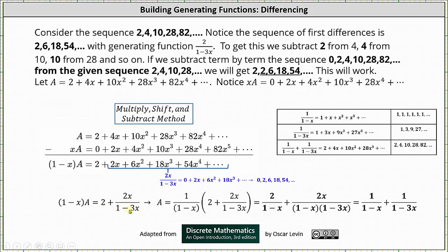Now to find the generating function for the given sequence, we solve for A. To solve for A, we multiply both sides of the equation by one divided by the quantity one minus x. On the right side of the equation, we distribute, which gives us two divided by the quantity one minus x, plus two x divided by the product of one minus x and one minus three x. This is a generating function for the given sequence. Now you might be saying wait a minute — that's not the same generating function we found in the last lesson, and you're right, it's not, but it is equivalent.